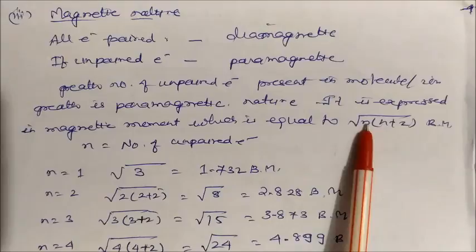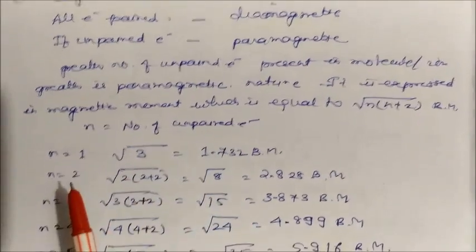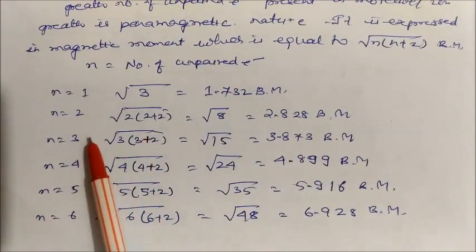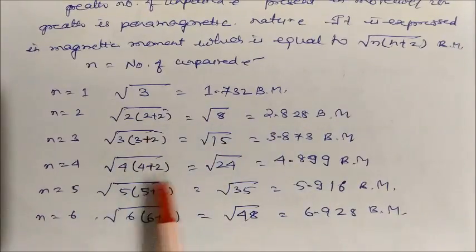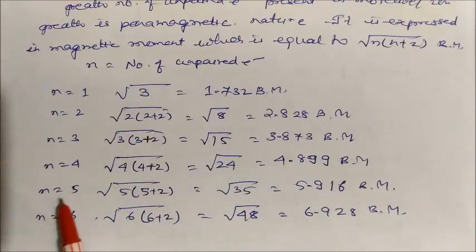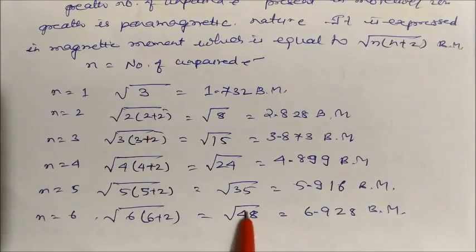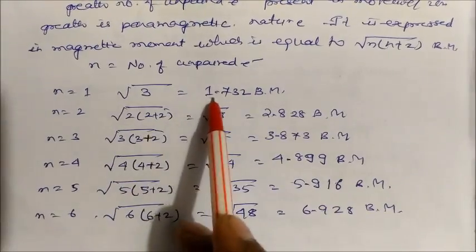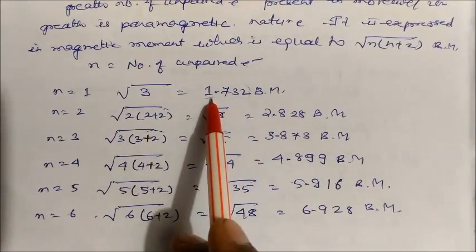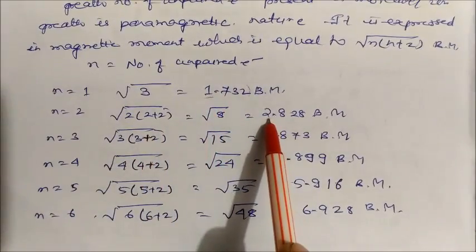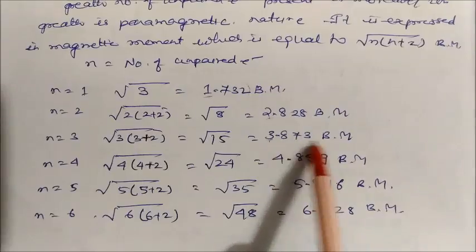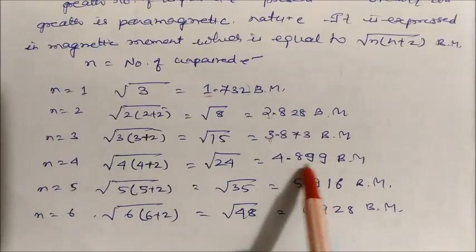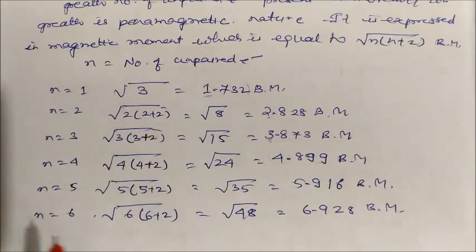Using the formula μ = √(n(n+2)) BM: if n=1, μ = √(1×3) = √3 BM; if n=2, μ = √8 BM; if n=3, μ = √15 BM; if n=4, μ = √24 BM; if n=5, μ = √35 BM; if n=6, μ = √48 BM. From an experimentally measured magnetic moment value, we can estimate the number of unpaired electrons in a molecule or ion.